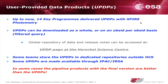The UPDPs can be downloaded as a whole or on a per-observation basis — I showed yesterday how you can do that. Some teams also store UPDPs in dedicated repositories outside the Herschel Science Center and outside the Herschel Archive, with dedicated databases that allow browsing and additional functionality. Some UPDPs are also made available through the IPAC EARS interface.